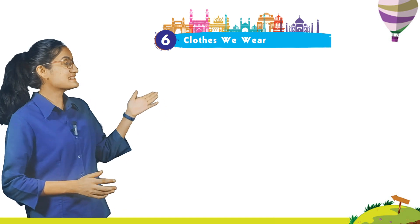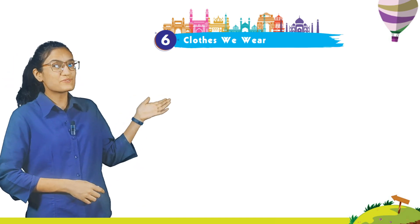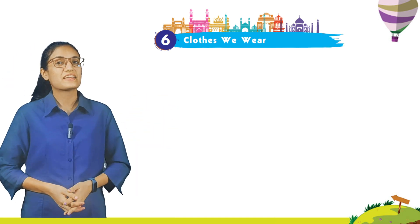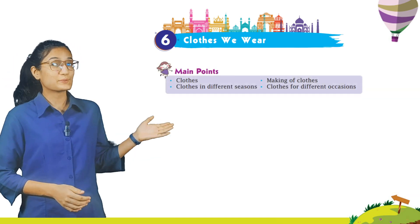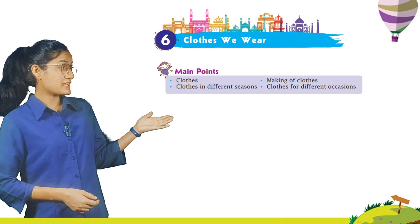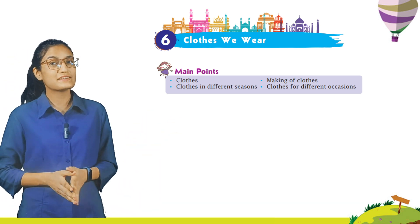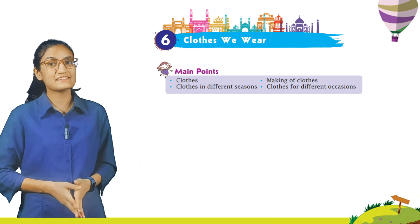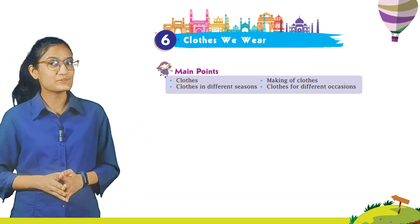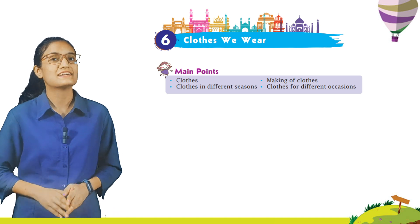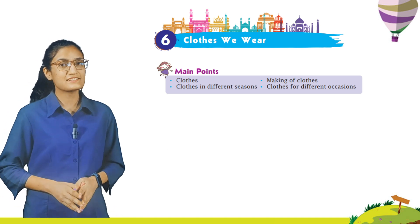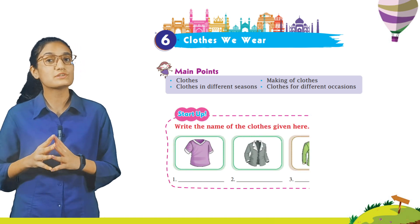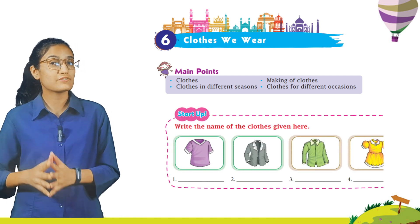Hi class 1 students, let's move on to chapter 6 — that is 'Clothes We Wear.' The main points are: clothes, making of clothes, clothes in different seasons, and clothes for different occasions. Let's start with the names of the clothes.